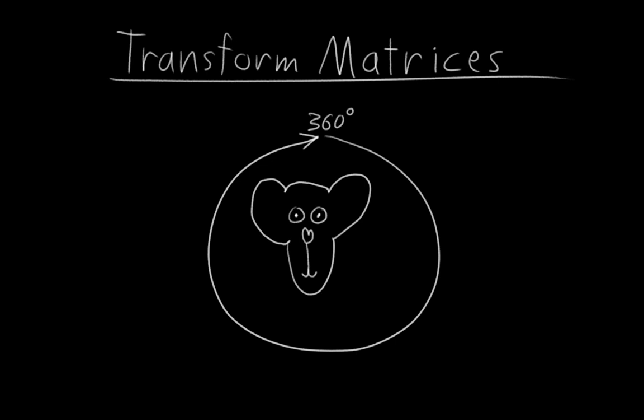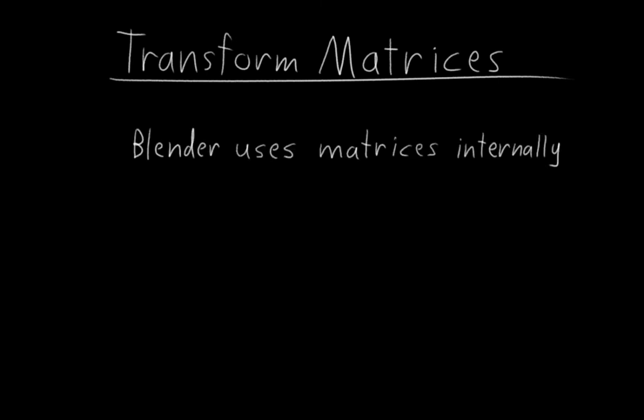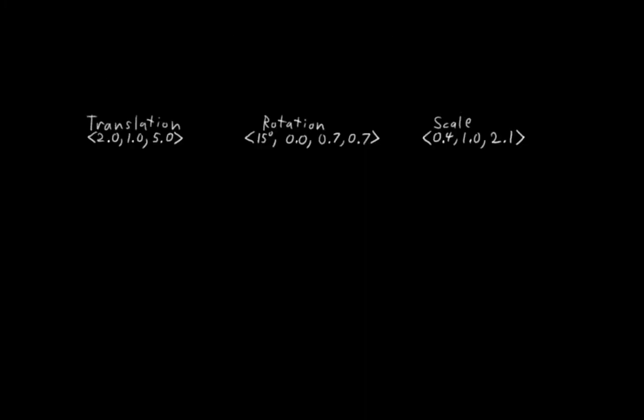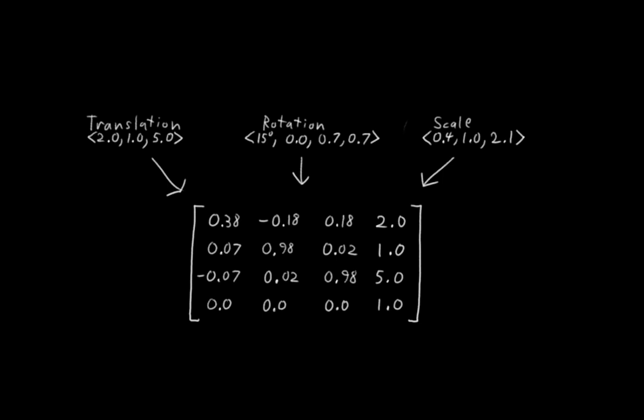I won't go into the math of transform matrices, but you should be aware that Blender uses them internally for representing and manipulating object transformations. When you as a user specify the location, rotation, and scale of an object in the end panel, or when those values are generated by animation, Blender actually converts them into a matrix for all of its internal object manipulations.